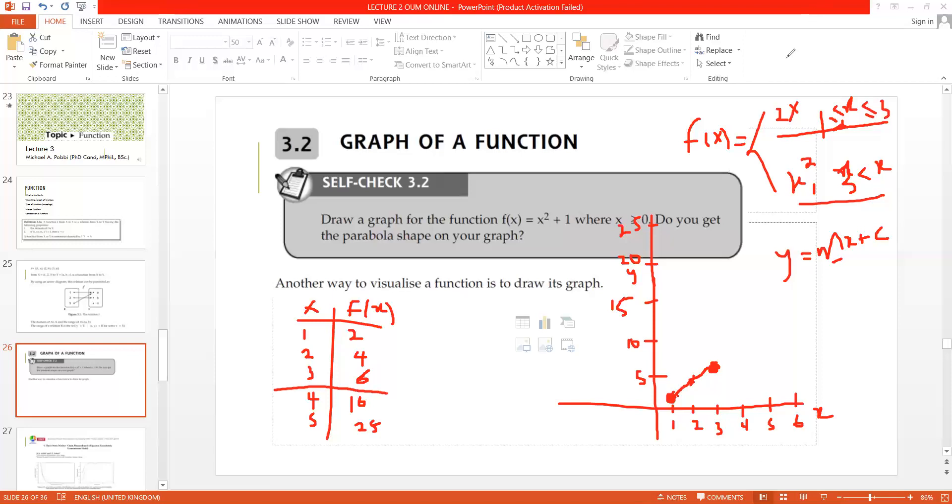So, for x squared, we have 4, 16. So we go 4, 16 here. The point is up here. 16 should be up here. Then we have 5, 25. We have 5, 25 up here. But this is a continuous interval. And it starts from 3, but 3 is not inclusive.